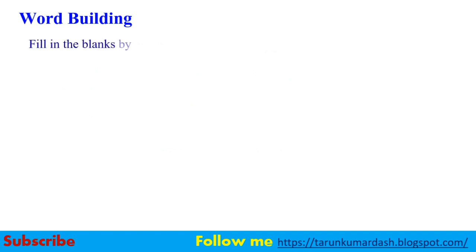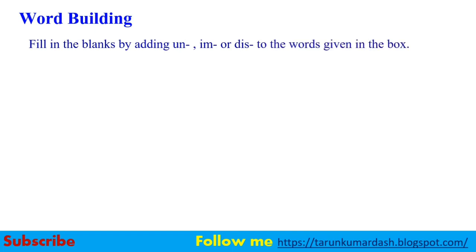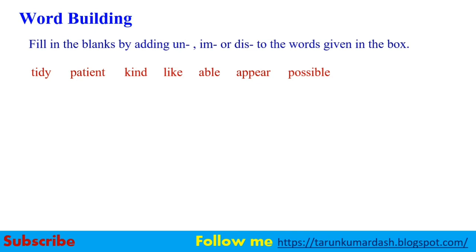Fill in the blanks by adding un, im, or dis to the words given in the box. The words in the box are: tidy, pleasant, kind, like, able, appear, possible. We have to add the prefixes to these words and fill in the blanks.